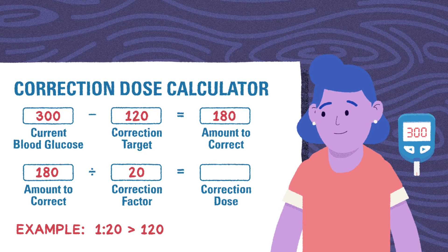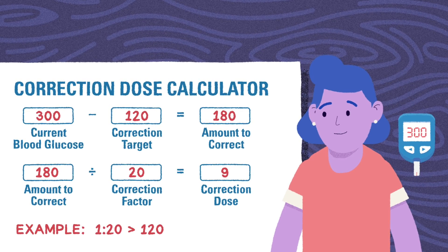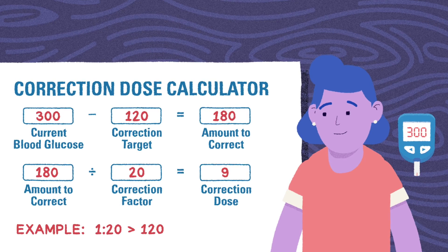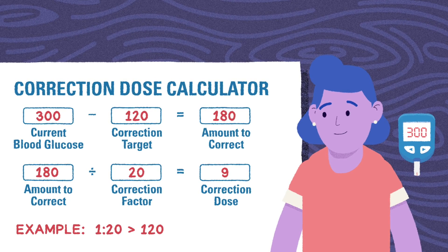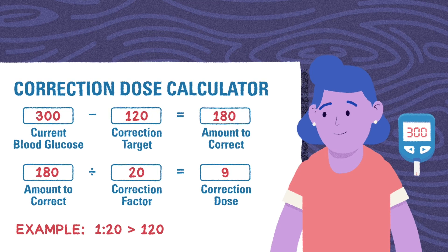180 divided by 20 equals 9. The child should receive 9 units of bolus insulin, along with the insulin needed to cover the carbs in their lunch, to treat the high blood glucose.